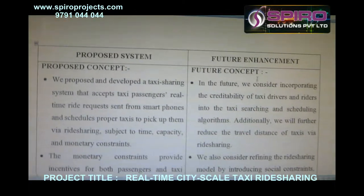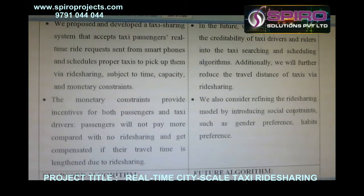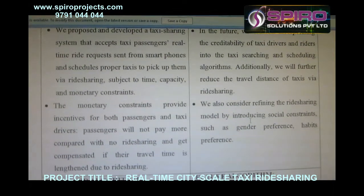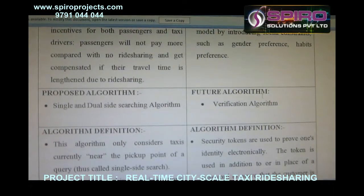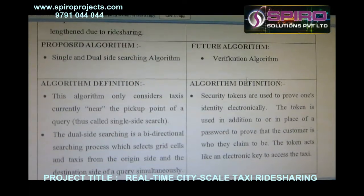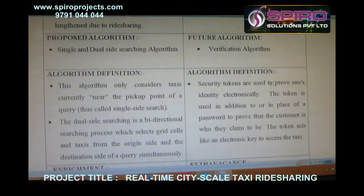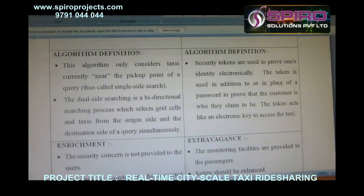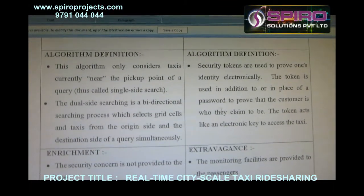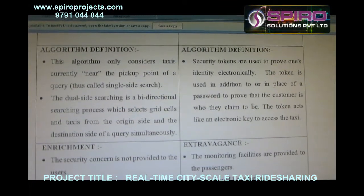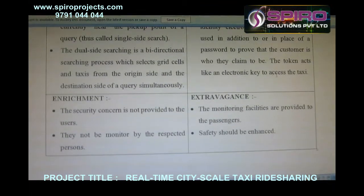For future enhancement, we will consider refining the ride sharing models by introducing social concerns such as gender preferences and habit preferences. In future implementation, we are using a verification algorithm. Security tokens are used to provide identity verification electronically. The token is used in addition to or in place of a password to prove the customer's identity, and acts as an electronic key to access the taxi.